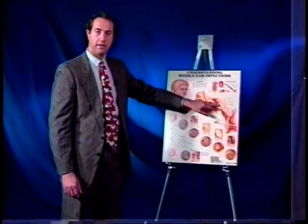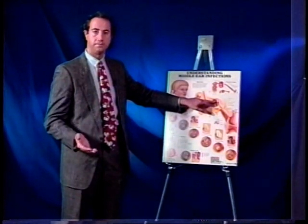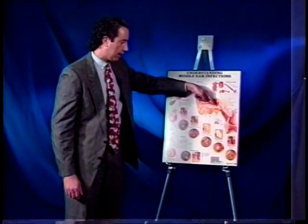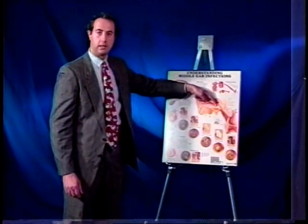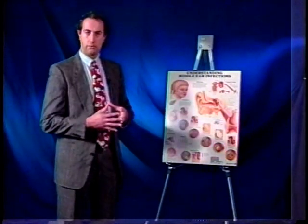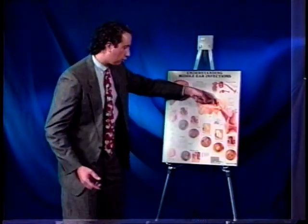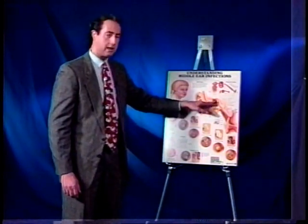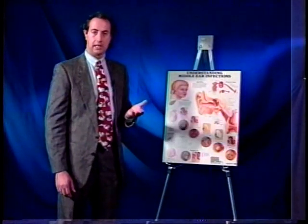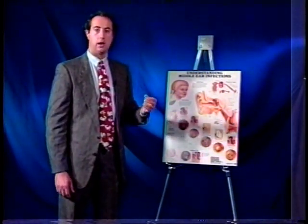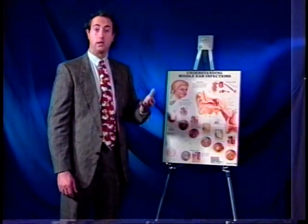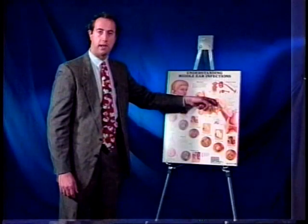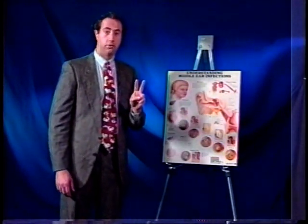If this area becomes blocked, you have air trapped in the middle ear space with no place to go. Over time, the cells lining the middle ear space suck that air out, causing negative pressure inside the middle ear, which gives us a retracted eardrum — what we see on a tympanogram or pressure test. If you build up enough negative pressure, fluid then flows out from the cells inside, and then you get fluid inside the middle ear space. Lastly, that fluid can get infected. That process from a blocked eustachian tube to negative pressure to a retracted eardrum to fluid to an active infection can occur within two hours.